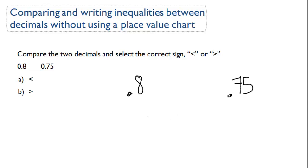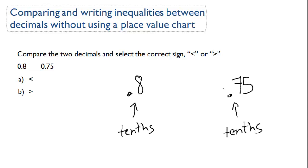We need to determine which number is bigger. So let's look at the first place value — the tenths place value. We just need to compare the two numbers in the same place value. So we have an 8 and we have a 7. So 8 is greater than 7, that's our answer. .8 is therefore greater than .75.